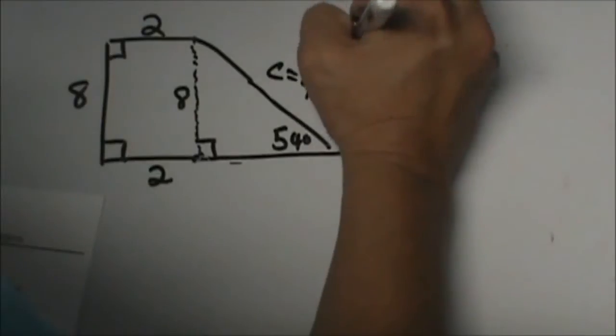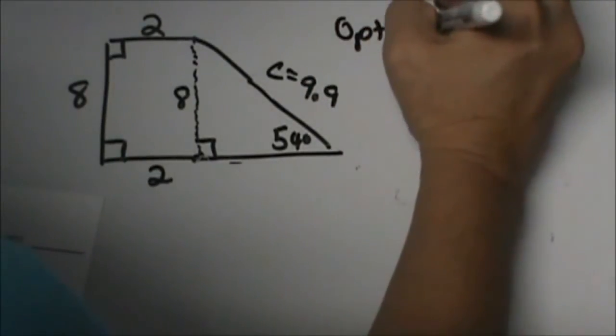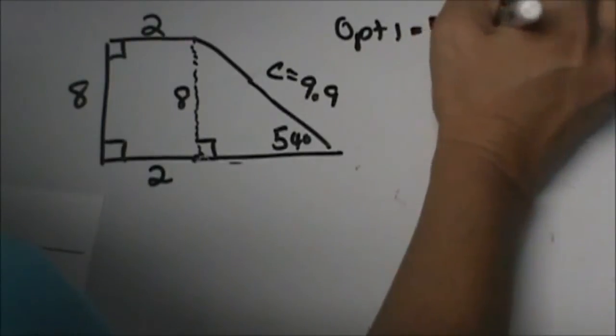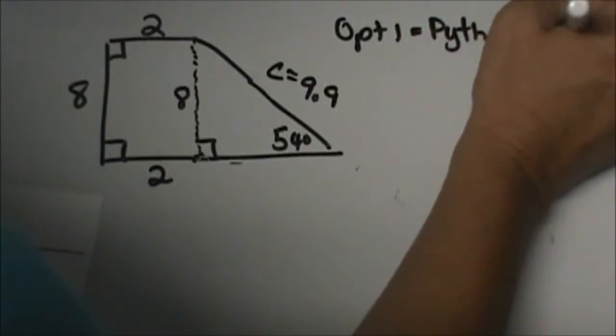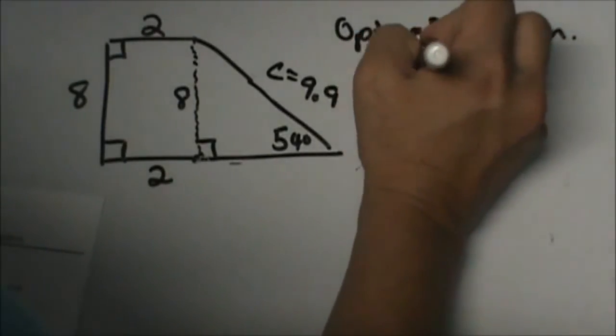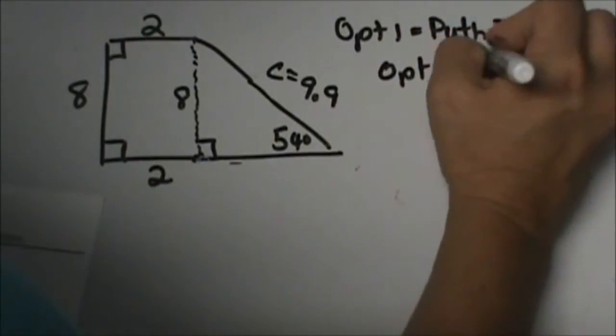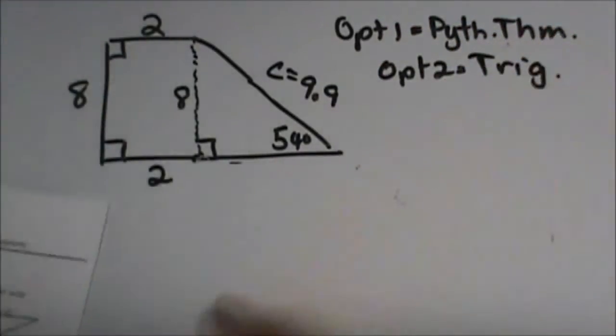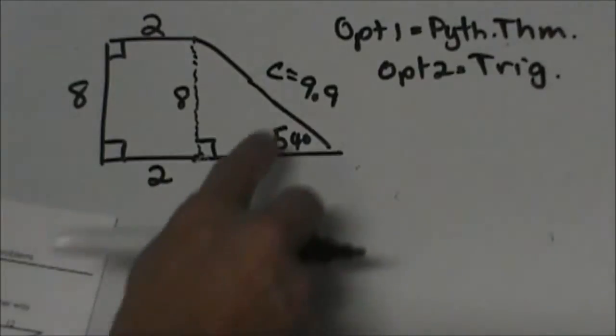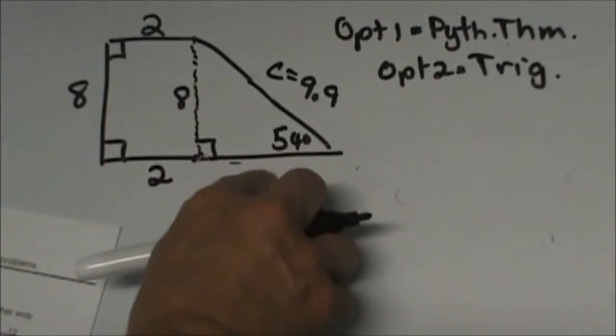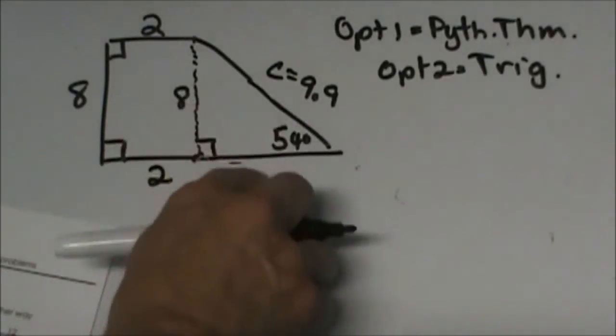So option one, I could use the Pythagorean Theorem and solve for the missing side. Or option two, I could use another trig function. You could just set up from here, use 8 as the adjacent side, and then use tangent.